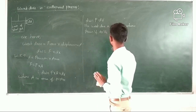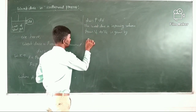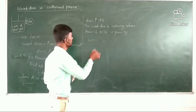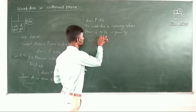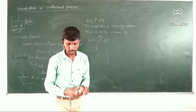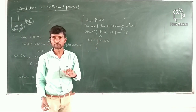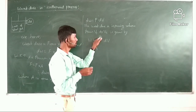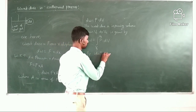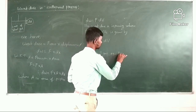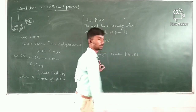The total work done from V1 to V2 is given by W equals the integral from V1 to V2 of P dV. Now, we want to change P in terms of T and N using the ideal gas equation. The ideal gas equation gives PV = nRT, so P equals nRT divided by V.